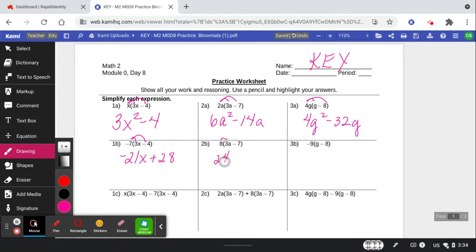8 times 3a. 8 times negative 7. Remember, don't be afraid to grab a calculator if the bigger numbers get you. Negative 9 times g. Negative times negative is positive. How'd you do?